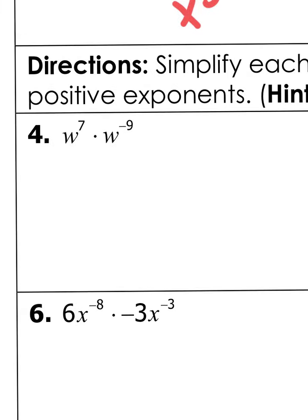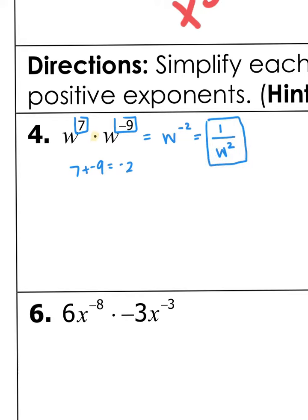We have w to the seventh power times w to the negative ninth power. We have multiplication here, so remember when we have multiplication, we add our exponents. 7 plus negative 9 is negative 2, so I have w to the power of negative 2. To make that positive, I just flip it down to the bottom. So it becomes 1 over w to the positive 2.